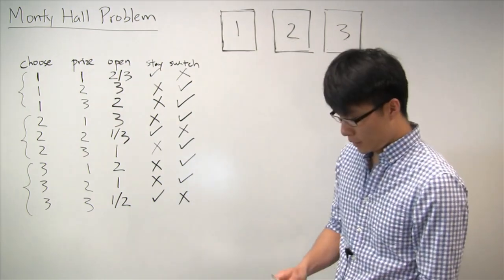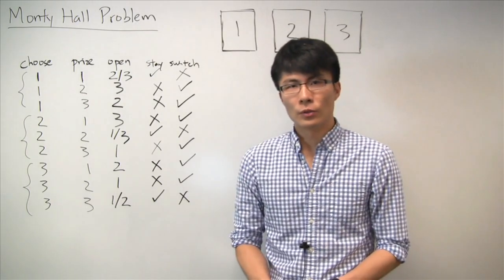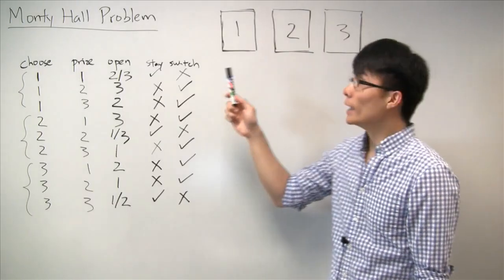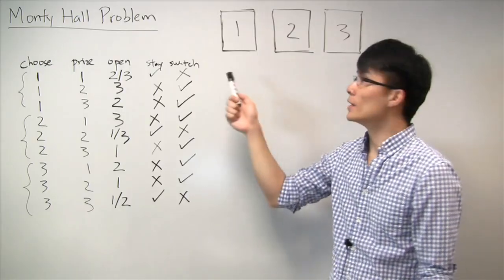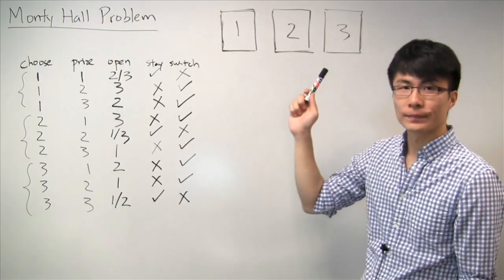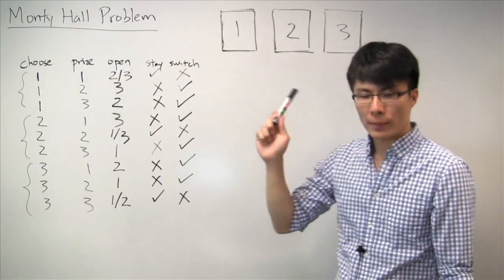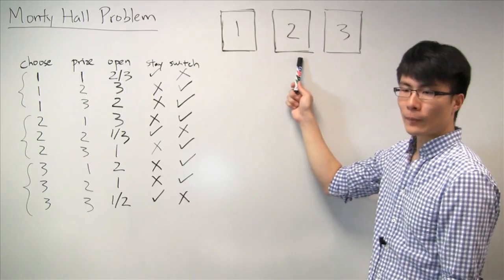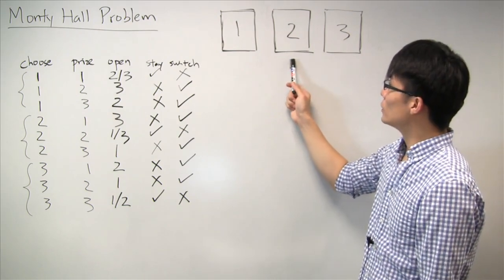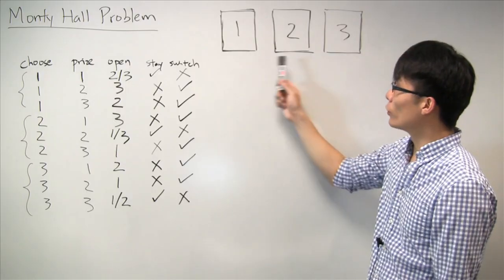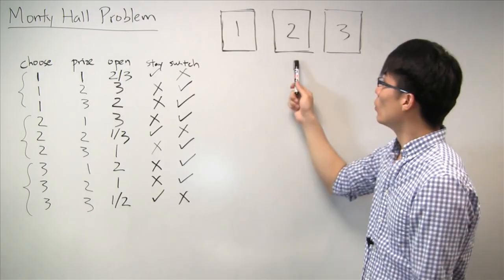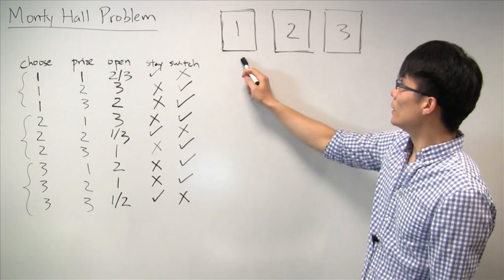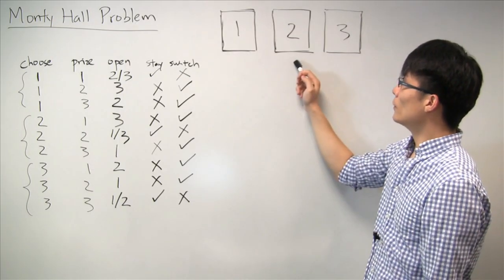The game is actually relatively simple. You're on a game show and you're presented with three closed doors. Behind one of these doors is a prize — let's say a car — and behind the other two doors there's nothing. You don't know which one it is. The rules of the game are that first you get to choose any one of these three doors. They don't show you what's behind that door. But your friend, who actually knows which door has the prize behind it, will look at the remaining doors — let's say you chose door one.